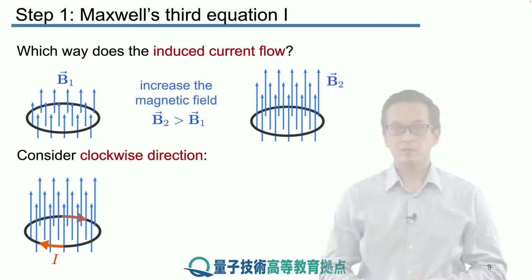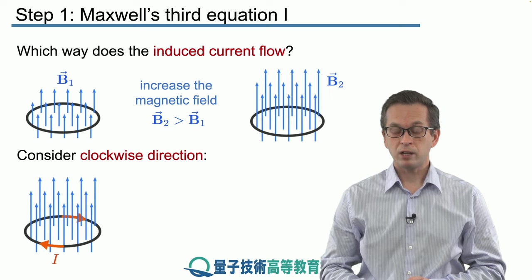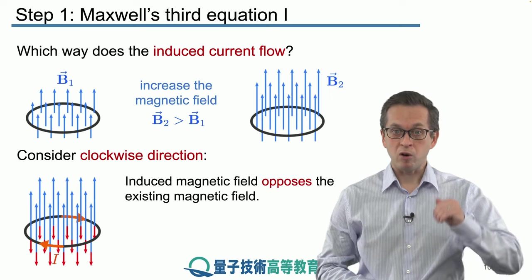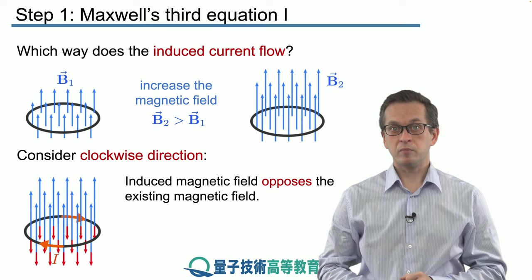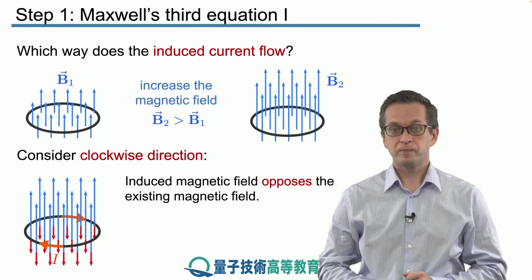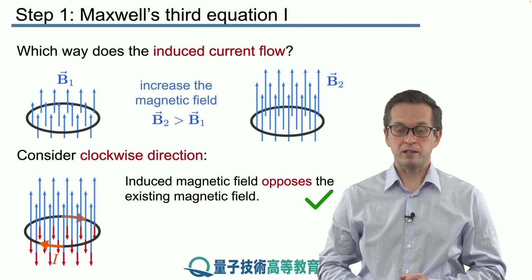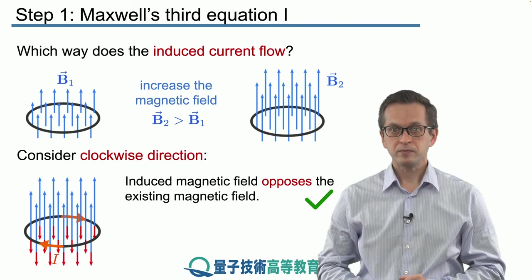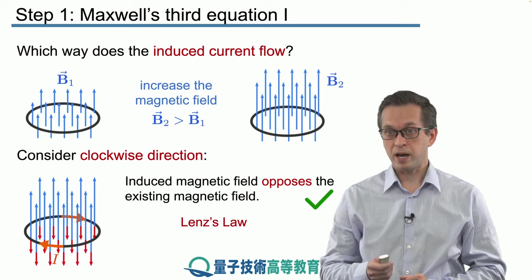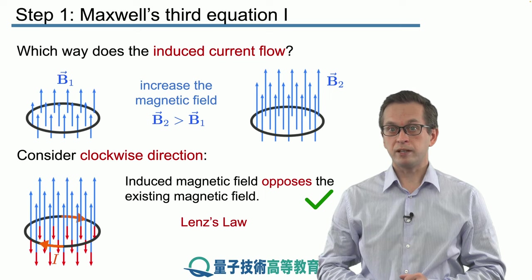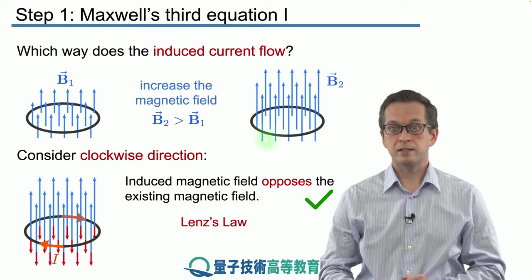Now, what happens when the current is flowing clockwise? Well, immediately we see that the induced magnetic field now opposes the initial magnetic field causing the induced current. And in that way, they balance out and everything is nice and physical. That explains why there is the minus sign for the electromotive force in front of the magnetic field. This is known as Lenz's law.